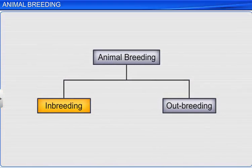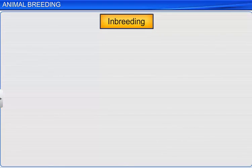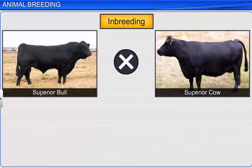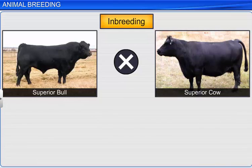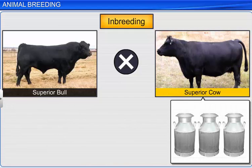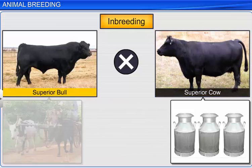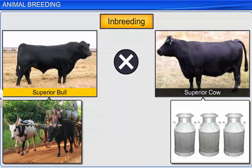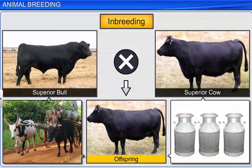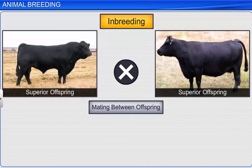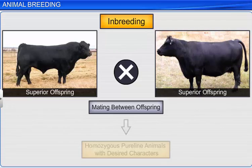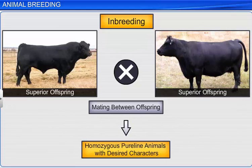Animals selected for inbreeding are of superior quality and are closely related for four to six generations. A superior quality cow is one that produces more milk, and a superior bull is one that is a strong draft animal and gives rise to superior offspring. Subsequently, mating is carried out between offspring which have superior qualities. Thus, inbreeding increases homozygosity in animals, resulting in a pure line of animals with desired characters.